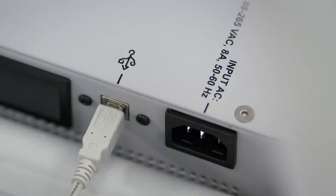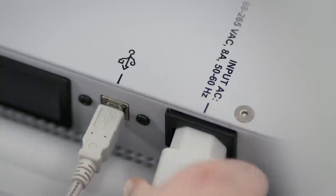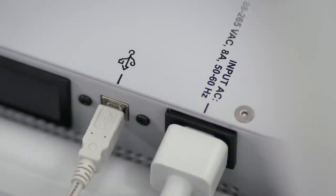To charge, connect the Surface Hub power cable to the input AC port on the battery and plug it into a power outlet. On the back of the battery, there are lights to indicate the charge status.